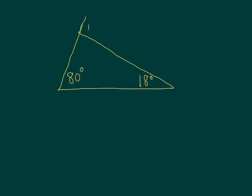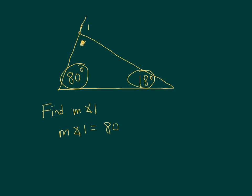Using the Triangle Exterior Angle Theorem, let's find the measure of angle 1. The two remote interior angles — those not adjacent to angle 1 — are 80 degrees and 18 degrees. So the measure of angle 1 is simply 80 plus 18, which equals 98 degrees.